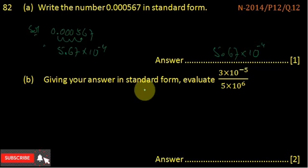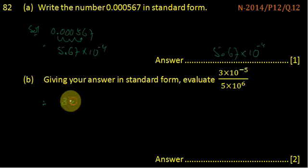In part b, giving your answer in standard form, evaluate 3 multiplied by 10 to the power minus 5 divided by 5 multiplied by 10 to the power 6.